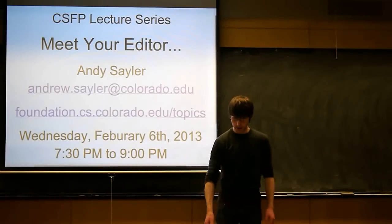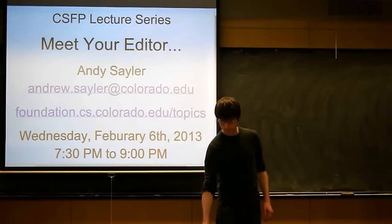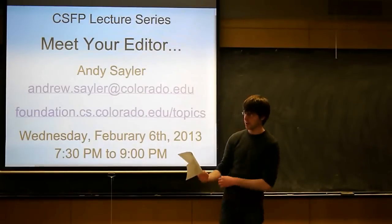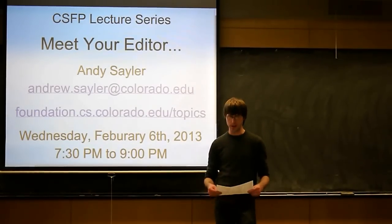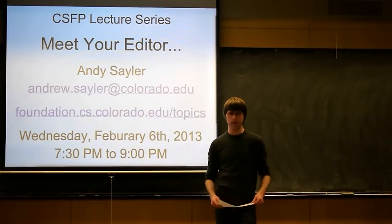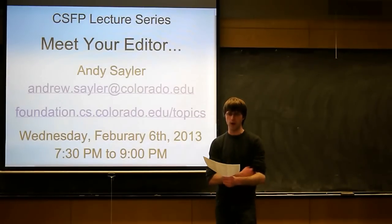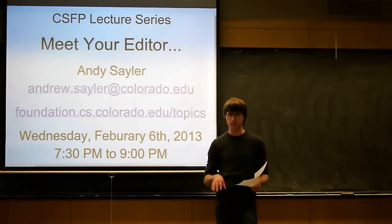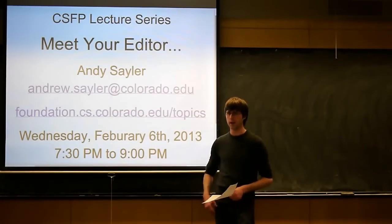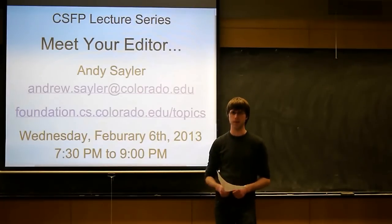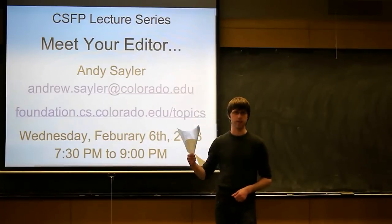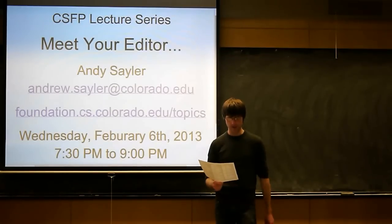All right, we'll go ahead and get started. I just passed around a copy of the Emacs cheat sheet. I do apologize — it is cut off on one side. The printer I printed them on is not aligned correctly. If you want a non-cut-off copy, you can get on Google and just Google 'Emacs cheat sheet.' It should be the first link. It's a PDF. But this gives you the basic gist.